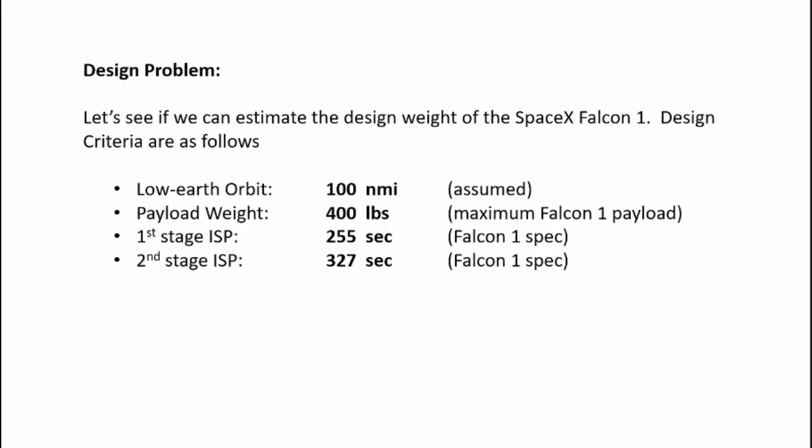Let's jump to an example problem. I want to estimate the weight of the Falcon 1 rocket built by SpaceX. The Falcon 1 is no longer used, but it's a very basic design, so it lends itself really well to this sort of analysis. If the weight I come up with is pretty close to the actual weight of the Falcon 1, then that means this analysis method is pretty good. Our design criteria are: a 100 nautical mile low-Earth orbit, a payload weight of 400 pounds, a first stage ISP of 255 seconds, and a second stage ISP of 327 seconds — those are Falcon 1 specifications.